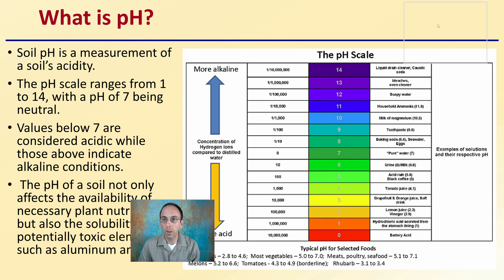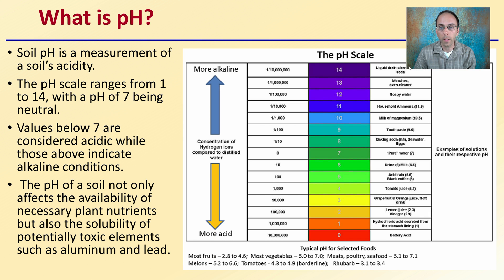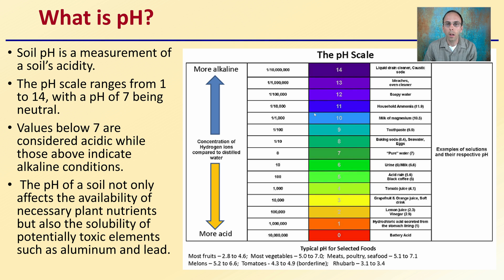So what is pH in the general sense? We talk about this number that shows up — it's a decimal. What does that number represent? pH is measured on a scale from 1 to 14, with 7 being neutral, representing pure water. pH values below 7 are considered acidic, while those above are considered alkaline. The pH of the soil not only affects the availability of necessary plant nutrients, but also the solubility of potentially toxic elements such as aluminum and lead. This is another reason why knowing your soil's pH value is important.